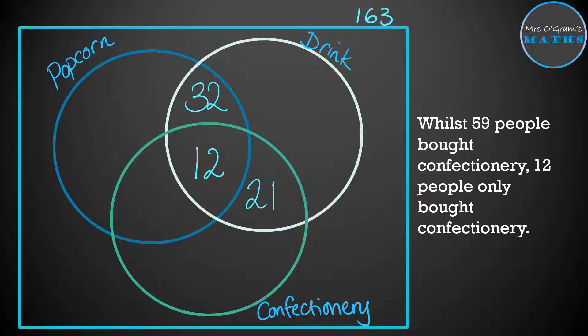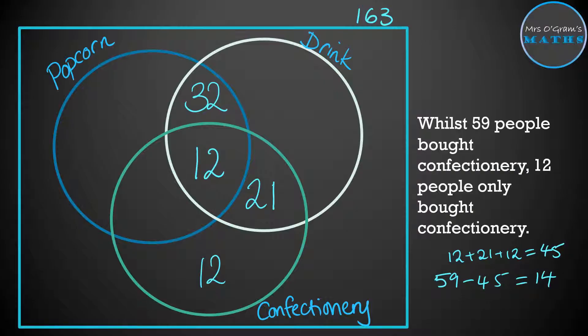We're told that 59 people bought confectionery, but only 12 people bought confectionery on its own — not popcorn or drink. So that 12 goes in the confectionery-only section. Now we've got 12, 12, and 21, which comes to 45. We know the total confectionery circle adds up to 59, so the missing part — the popcorn and confectionery overlap but not drink — is 14.